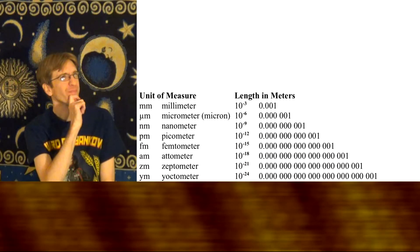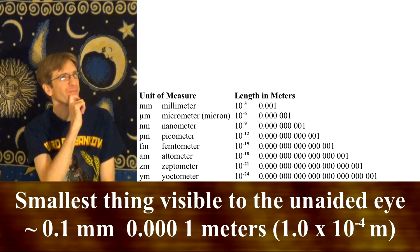Without the use of a microscope or magnifying glass, the smallest thing that you can see with your eye alone is about 0.1 millimeters in size.